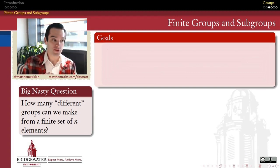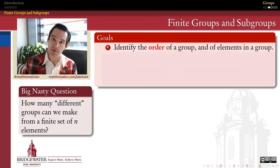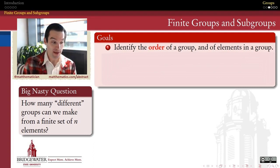The goals for this section are as follows. First of all, for a finite group, we can define a notion of order, the order of the group. And we can also define, really in any group, a notion of order that attaches to elements. So we're going to talk about two different kinds of order, and that's going to start in this video. The order of a group and the order of elements within that group.